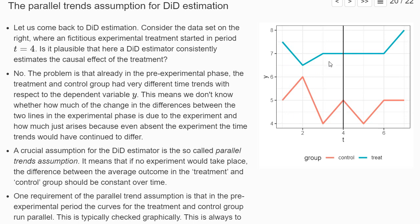These curves don't move in parallel. If we estimate some change between the differences in the control group and treatment group in the pre-experimental and post-experimental phase, it's not really clear whether that change is due to the experiment or just because these time trends moved further. Maybe the control group went down further because it has a seemingly negative time trend, while the treatment group does not have such a negative time trend. So a crucial assumption for the difference-in-differences estimator to consistently estimate the causal effect of a treatment is the so-called parallel trends assumption.